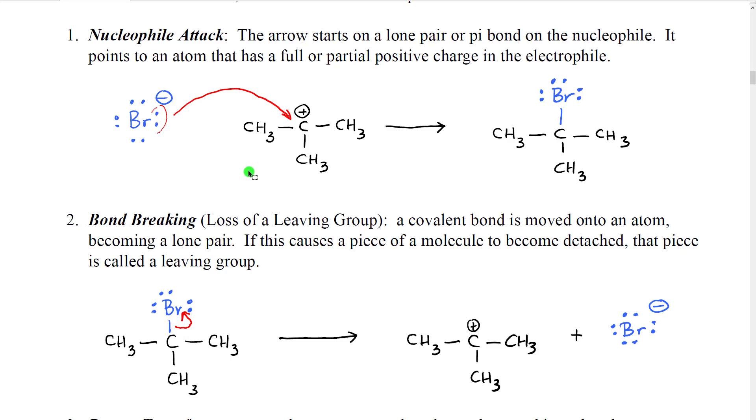We can also have the exact reverse of that, a bond breaking, which sometimes we're going to call the loss of a leaving group. In a bond breaking reaction, we have a covalent bond. It breaks away from one of the two atoms in the bond and moves completely onto the partner atom. So when this happens, a portion of this overall molecule becomes detached from the molecule right here. We call that piece a leaving group. The arrow starts on the bond because that's the pair of electrons that's moving. And it points to one of the atoms in the leaving group because that's where the pair of electrons arrives. And when it arrives, it becomes a lone pair because it's no longer between two atoms, but it's only attached on one atom.